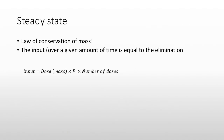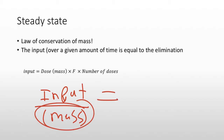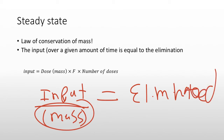Let's talk about how we get to the steady state mathematically. Steady state means that the mass put in equals the mass eliminated — that's the law of conservation of mass. The mass put in is the dose, but only some of that dose is absorbed, so we multiply by the bioavailable fraction, then multiply by the number of doses.